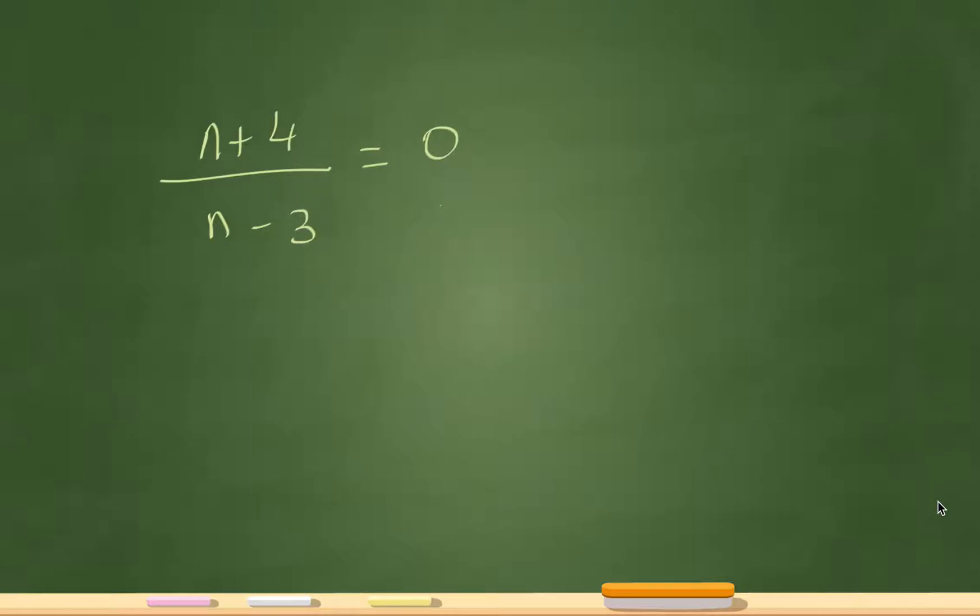Let's start this problem. I really want you to think about this a little bit logically. It's saying n plus 4 divided by n minus 3 must equal 0.